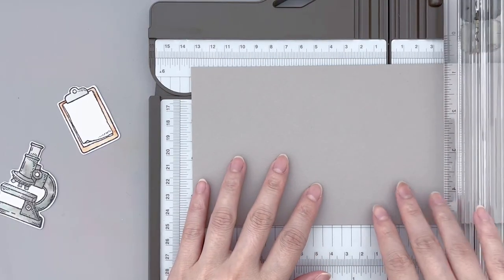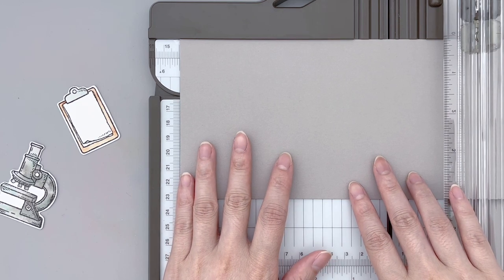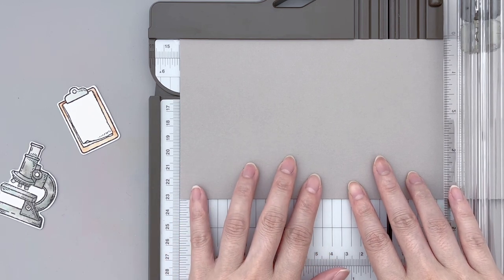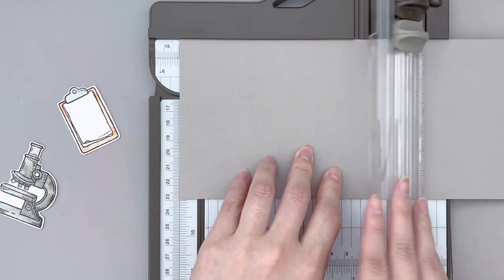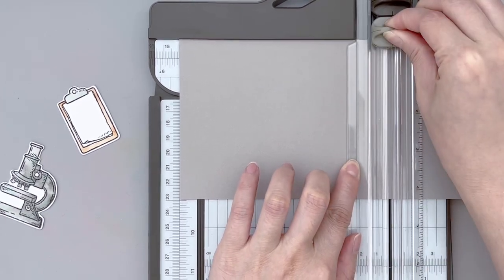Now we can move on to make the mechanism that will hold the gift card. I have a normal A2 card base right here. It's scored in the middle at 5.5 inches but we're going to make two more score lines.